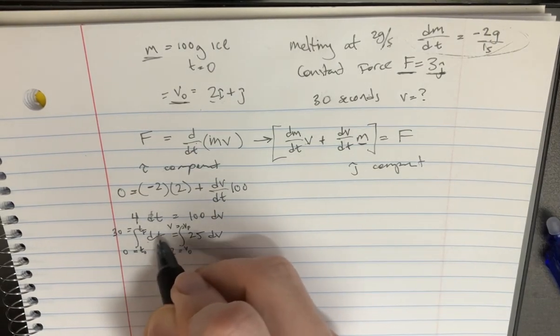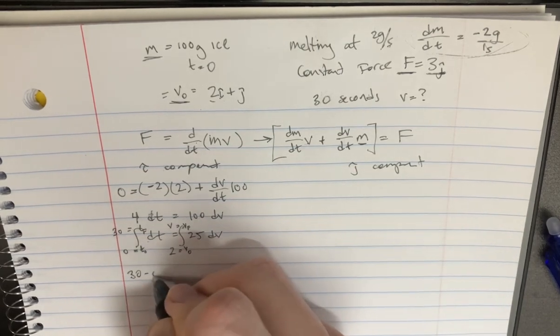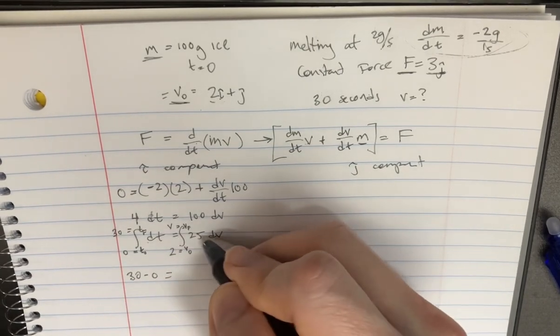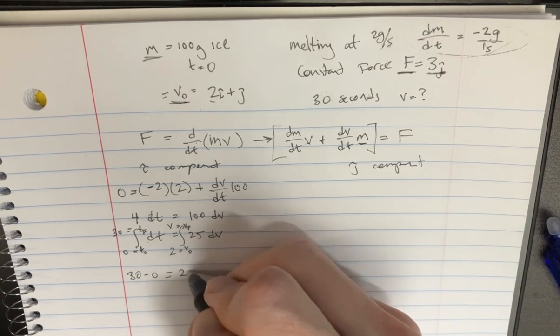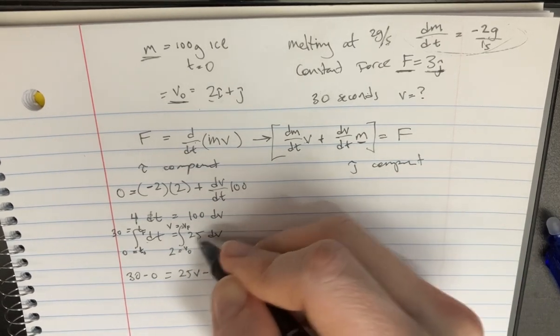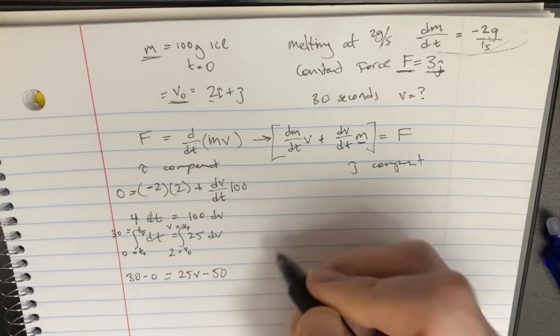Okay great. So if we were to integrate dt, it's just t. It's going to be 30 minus 0 on that side, right? And if we do this, it's going to be 25 times v. 25 times v minus 25 times 2. So that's just minus 50.